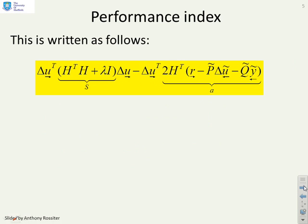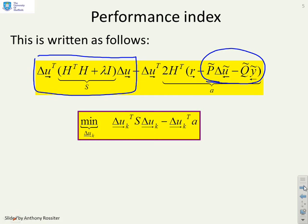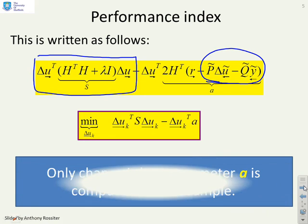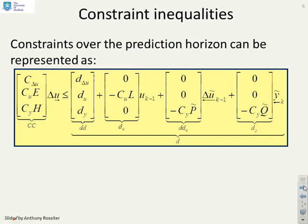The change to the performance index is relatively straightforward. The quadratic part is the same — no change. But the linear part changes: we now have P-tilde delta-U-tilde-past and Q-tilde Y-tilde-past instead of P delta-U and Q Y-past. Therefore, there's a change in the parameter A, and that's the only change in the performance index. When we calculate A, we have to use the new formula, not the old one, but it's relatively straightforward to do.